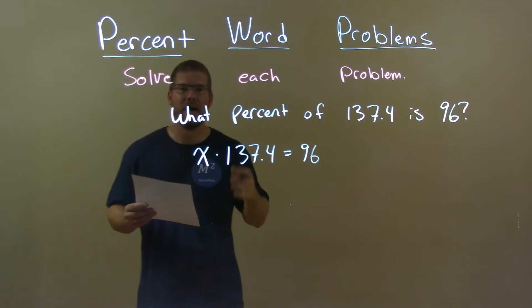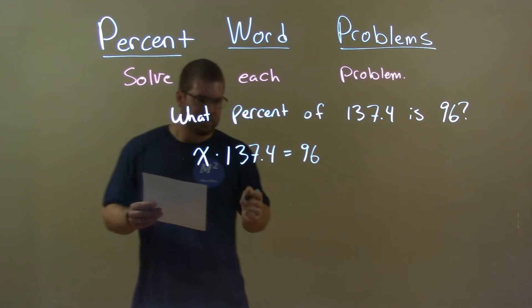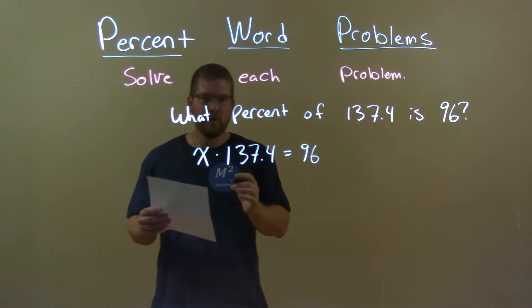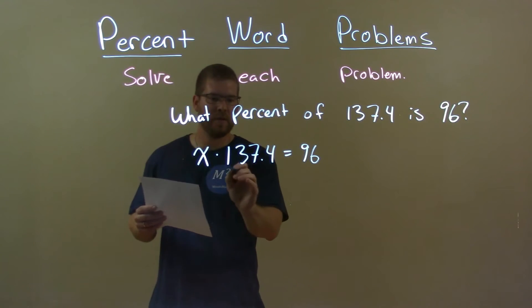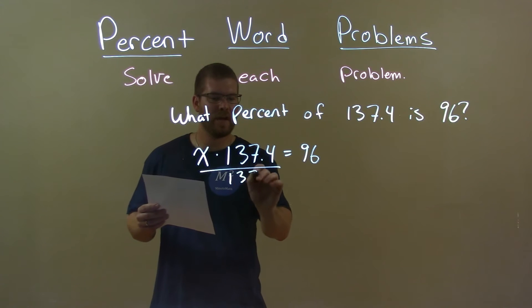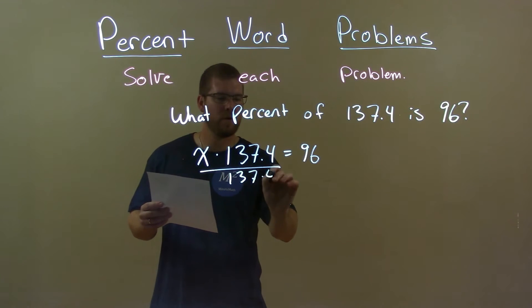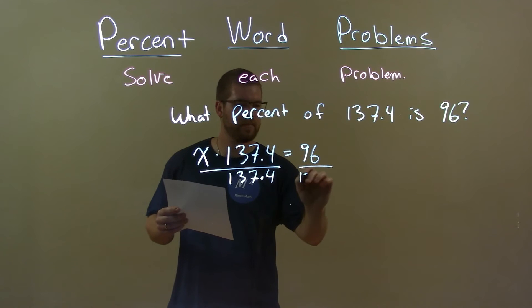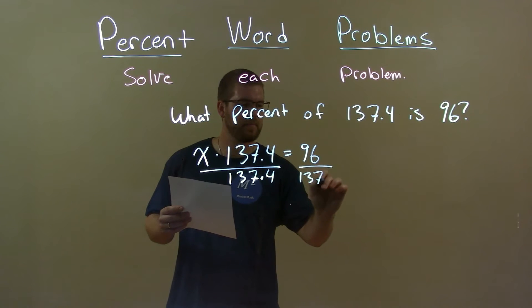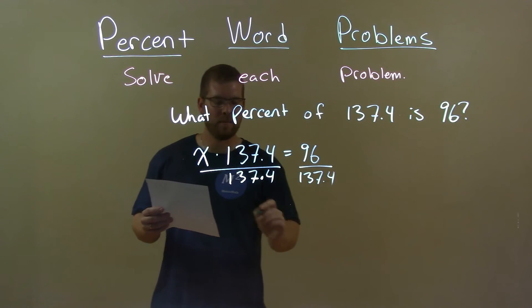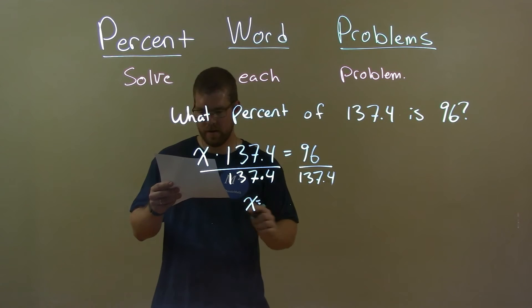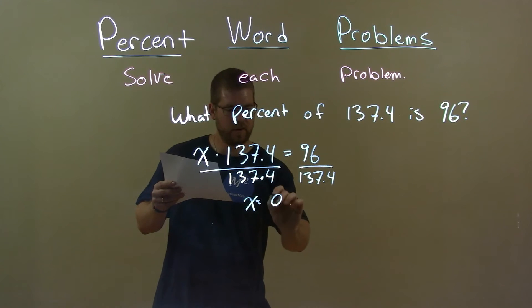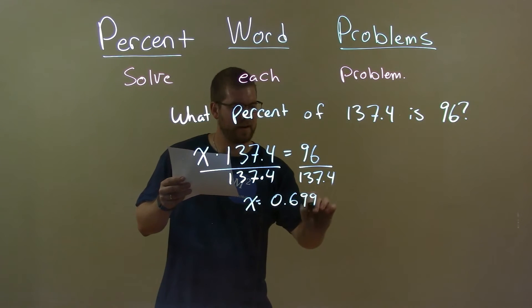Now we have to solve for x. The opposite of multiplication is division, so divide both sides by 137.4, and I'm left with x equals 0.699.